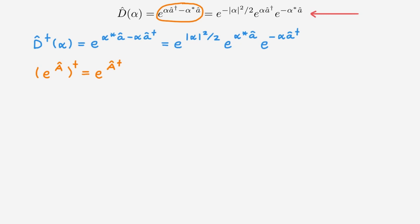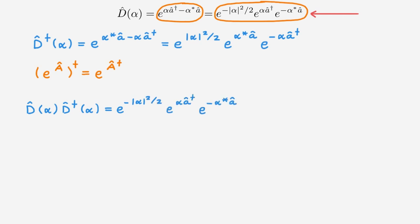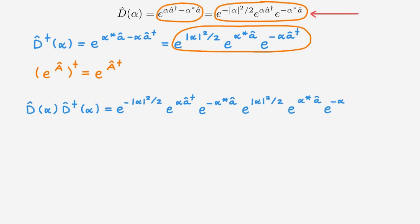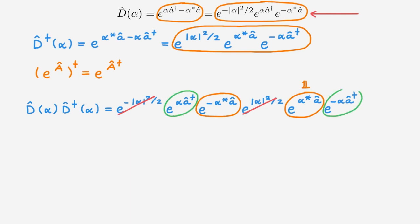With these results, we can evaluate the product D times D†. Copying the expression for D we get three terms, and copying the expression for D† we get three terms. The two scalar exponentials cancel. One pair of exponentials combines to the identity because the exponents commute, and the other pair also combines to the identity for the same reason.